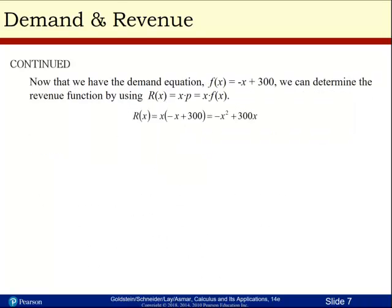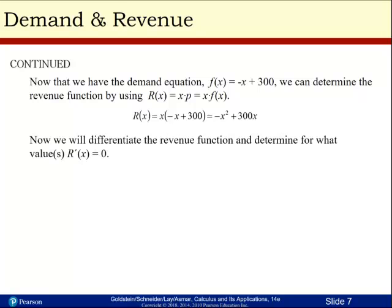Now we have the demand equation f of x equals negative x plus 300. We can determine the revenue function by using r of x equals x times p, which means that it equals x times f of x. Plugging those values in, we'll get that the revenue equation equals negative x squared plus 300x.